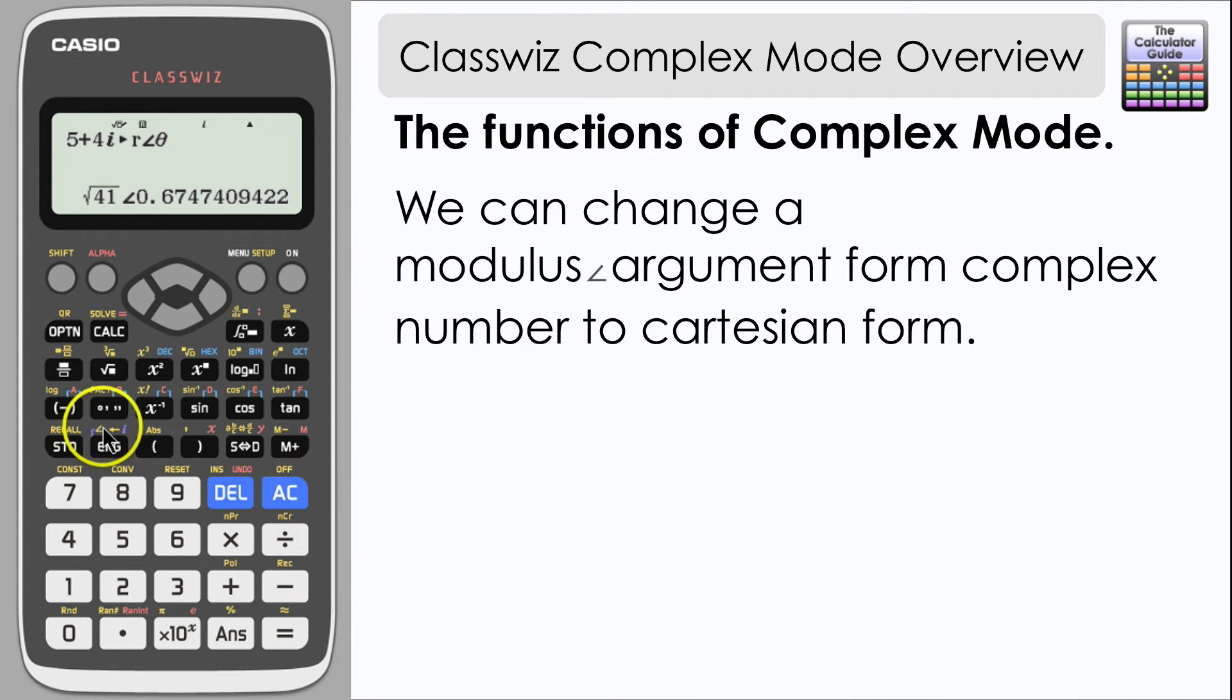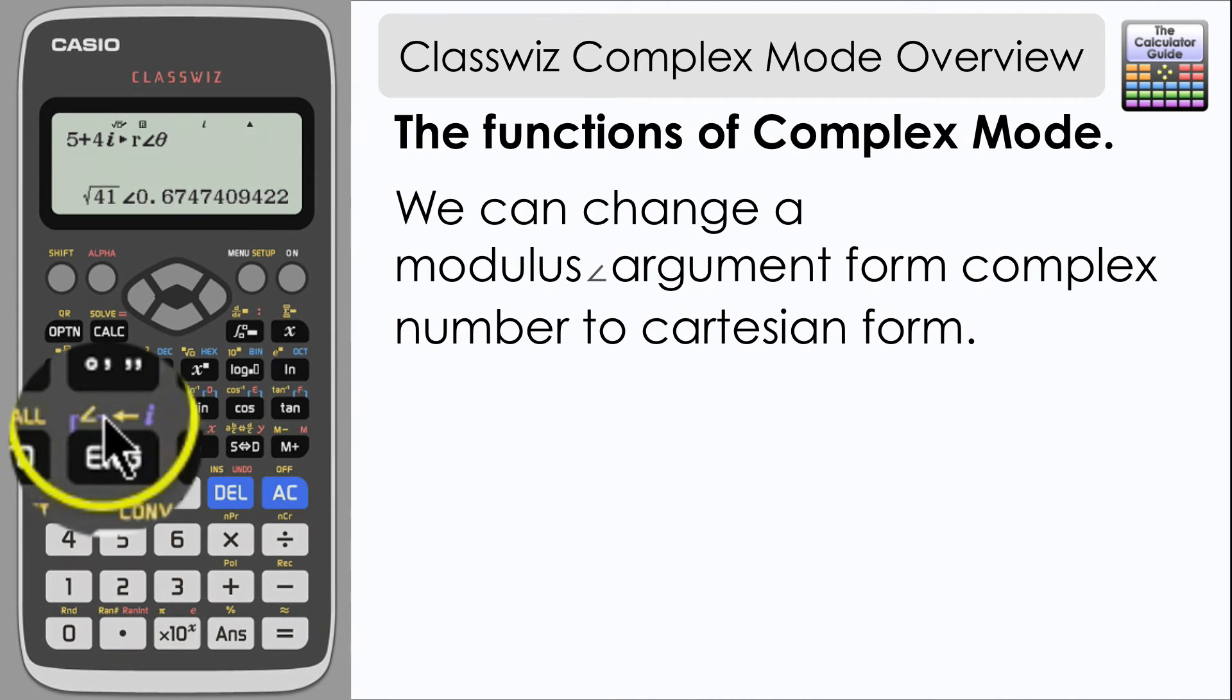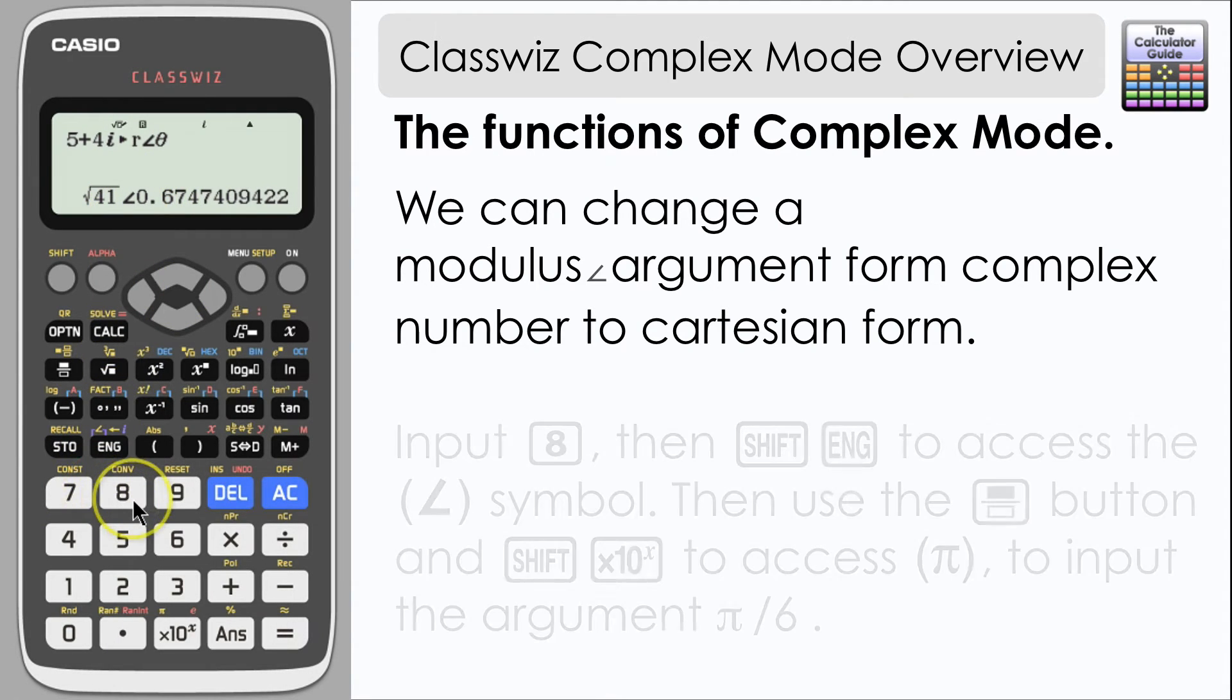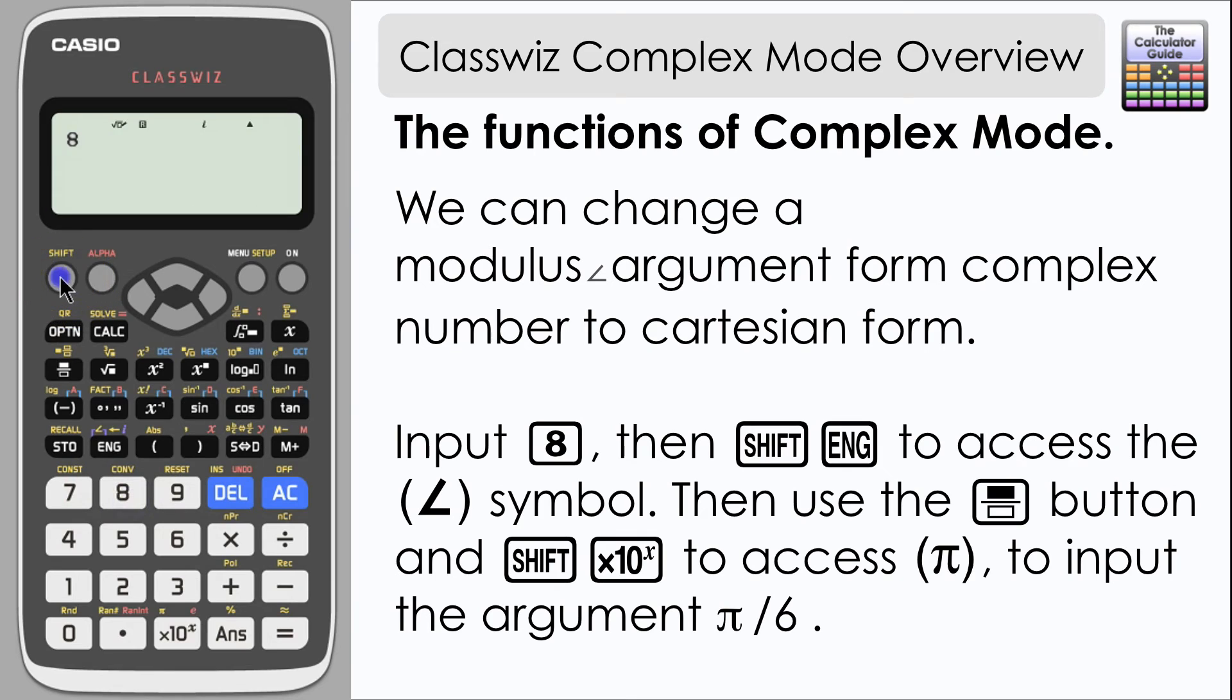So if you input 8 and then if you press shift and the engineering key, notice there's a little angle symbol that we're going to use. After that angle symbol we then need to input the argument. So use the fraction button, shift and times 10 to the power x will access pi, and input your denominator as 6.